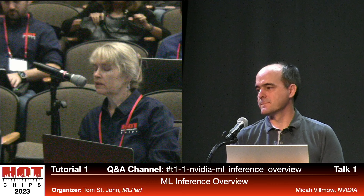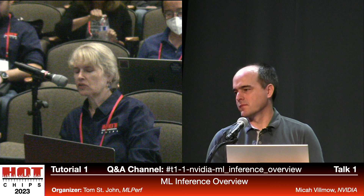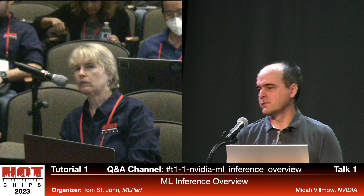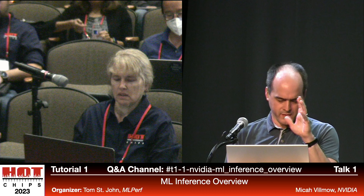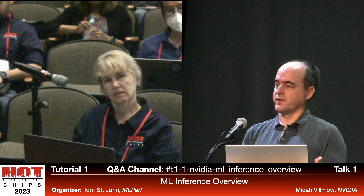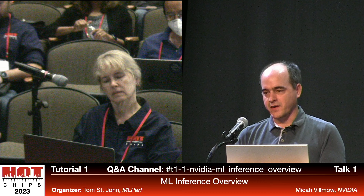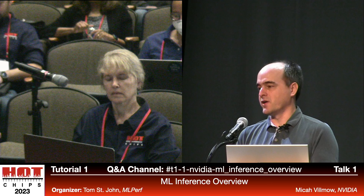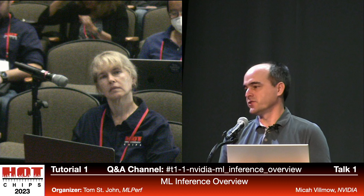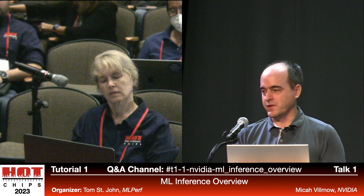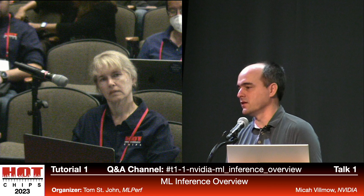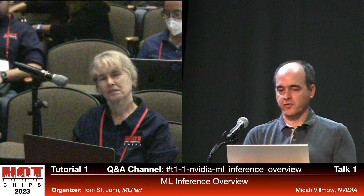Cliff Young from Google asks: would you recommend using the same machines for training and inference? One problem with using a big training device for inference is that the inference workload in many cases is single-batch, while training devices are made for multi-batch throughput. However, with multi-process execution you can run N different input streams to fill up the device. NVIDIA has the ability to virtualize devices — splitting them into up to seven different virtual devices — so you can use training devices for inference, but it requires coding them and setting up the software differently.